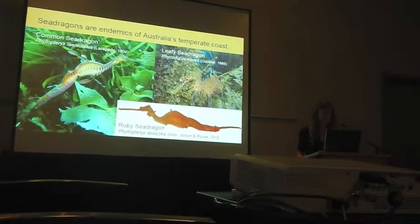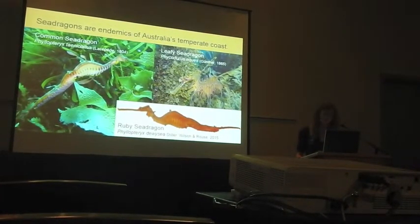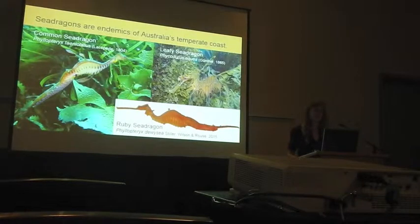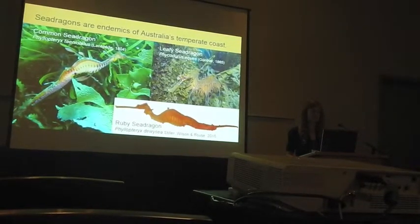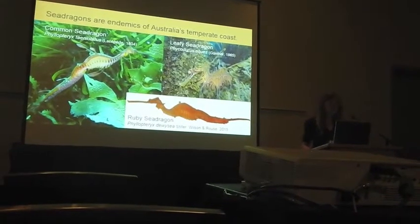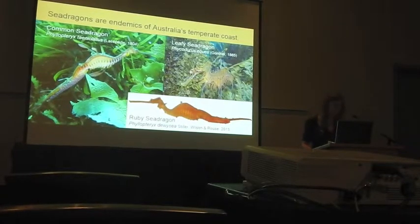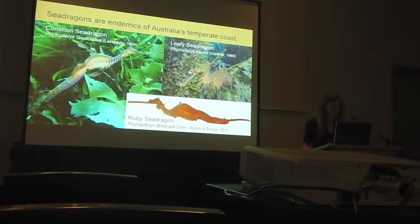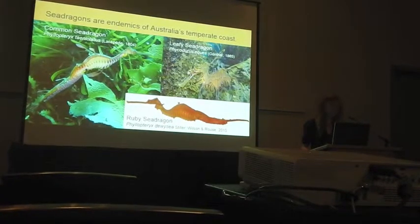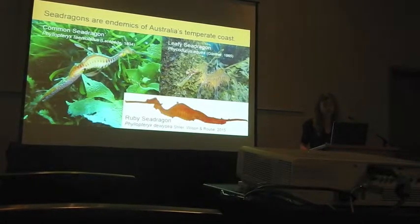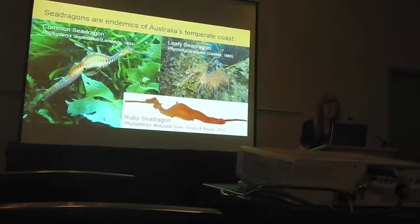There are three species of sea dragon: the common sea dragon, the leafy sea dragon, and the ruby sea dragon. This last species was only described in 2015 by our group, highlighting that the southern Australian coast still holds quite some excitement we haven't uncovered yet. The leafy and common sea dragons show amazing camouflaging adaptations that allow them to blend in with their macroalgae habitat, and they are hugely popular in aquariums worldwide. Nonetheless, we know relatively little about them scientifically and there has been no genetic assessment of their phylogeographic structure.